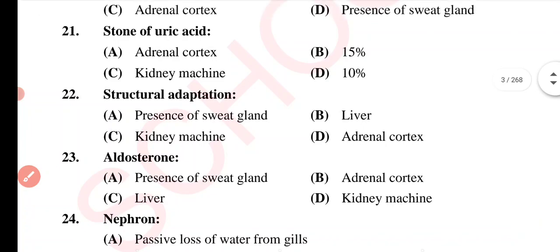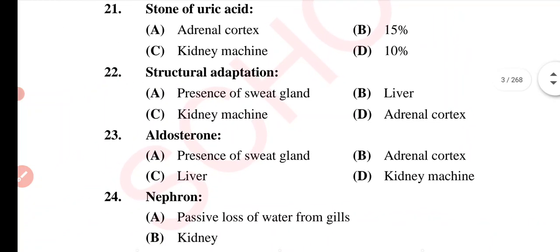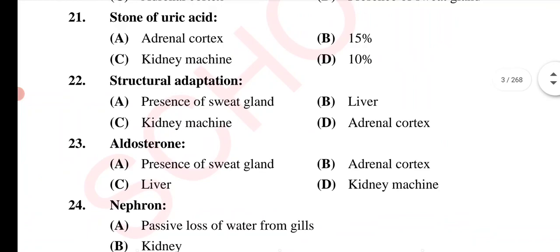Question 22. Structural adaptation — Option A: Presence of sweat gland. Option B: Liver. Option C: Kidney machine. Option D: Adrenal cortex. The correct option is Option A: Presence of sweat gland.